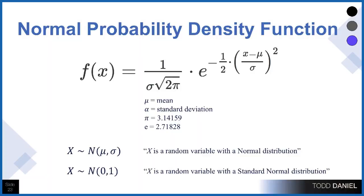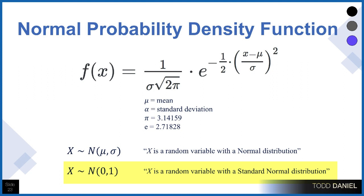There are a few things I do want to point out. First is the notation we would use to describe a curve: we say that x is a random variable with a normal distribution and it has a mean and a standard deviation. For a standard normal curve, x is a random variable with a standard normal distribution, which means the mean is zero and the standard deviation is one.